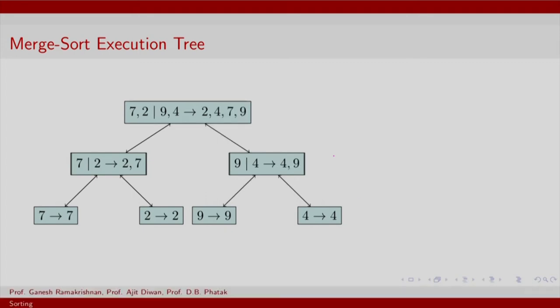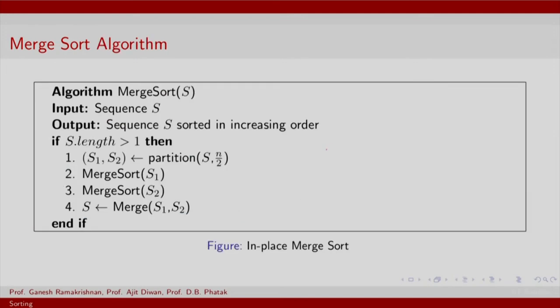You can visualize any merge sort instance through a complete binary tree, and the number of communications in terms of divide and combine are of the order of the height of this tree.